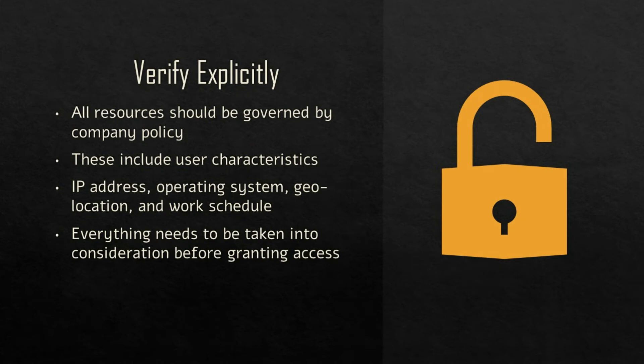The third principle is verify explicitly. All access to resources should be governed by company policies and be authorized based on available characteristics, such as IP addresses, operating systems, geolocation, and work schedule. This means that everything about the user should be taken into consideration before granting access to resources. It's a continuous process of authenticating and authorizing by monitoring who and what has access based on behavioral changes within the network.